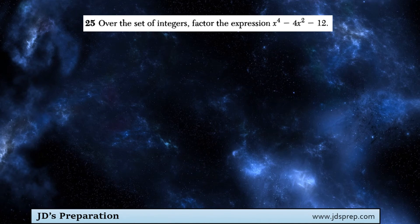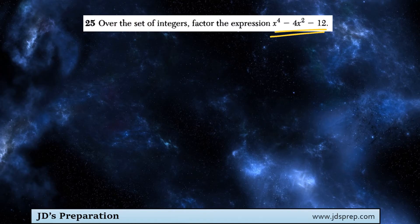This is a fairly straightforward question. All we need to do is factor x to the power of 4 minus 4x squared minus 12.